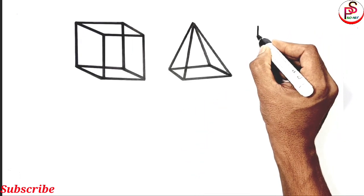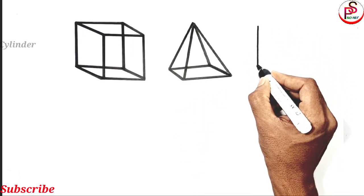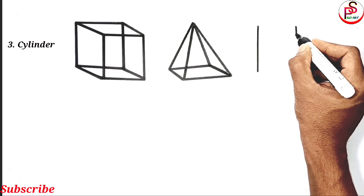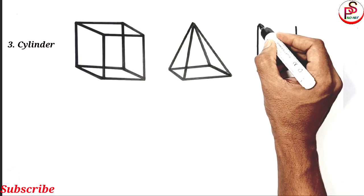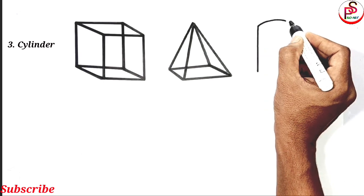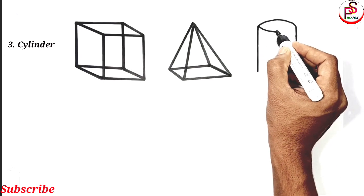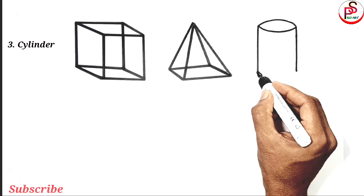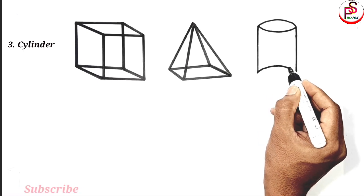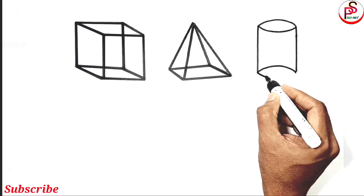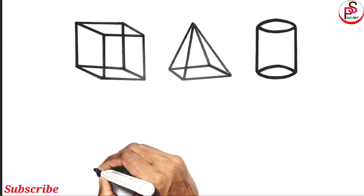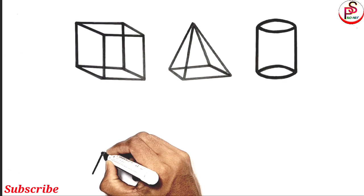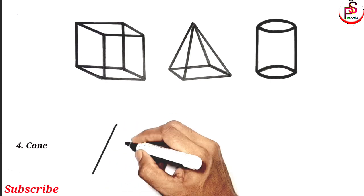The third shape drawing is a cylinder. The fourth shape drawing is a cone.